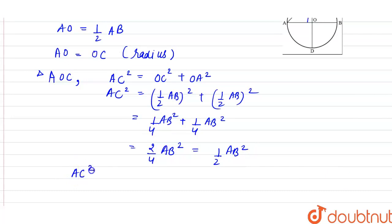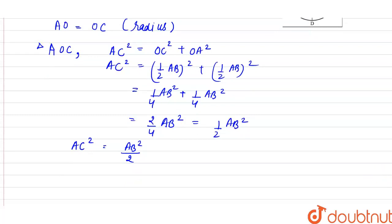Now if we take under root both the sides, AC will be equal to under root of AB² divided by 2. So root will be cancelled with square, so it will be equal to AB divided by under root 2.